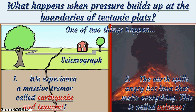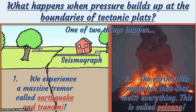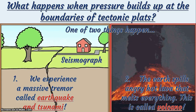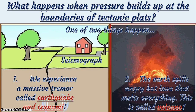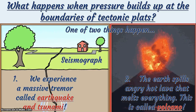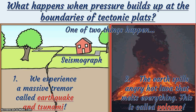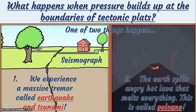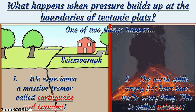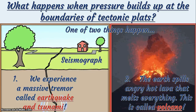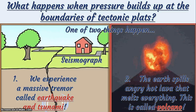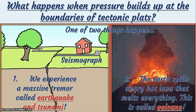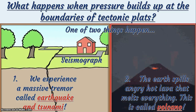Another thing is the volcanic eruption. When there is so much pressure, it could push out the magma in the Earth's crust to the surface — and that is what is called a volcano. So the two things that could happen as a result of so much pressure built around tectonic plates are: number one, earthquakes, or volcanoes. Remember, earthquakes underwater we refer to as tsunamis.